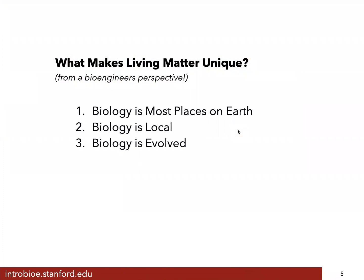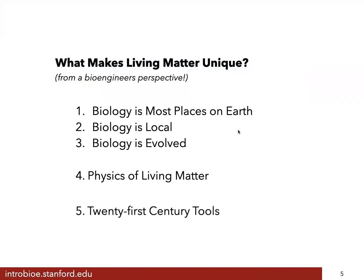The first three have to do with life as we observe it on the planet — it's most places, it's local, it's evolved. We'll lift the lid on these three. The fourth has to do with the physics of living matter — from the inside out, how does it behave differently from rocks and computers? And the fifth has to do with our time: we're bioengineers in the 21st century, and we have tools that are making bioengineering really unique in how they relate to the matter we're working with.